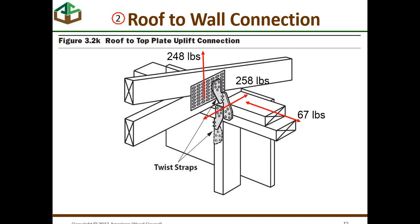We haven't spent much time discussing the differences between components and cladding loads and main wind force resisting system loads. The loads at this truss-to-wall connection are main wind force resisting system loads, calculated from the overturning moment we did in webinar one to get us a connector load at the end of the truss. These are main wind force resisting system loads because they are collecting loads from several surfaces, whereas the nail attaching sheathing to the rafter is only connecting load from a small area influenced by that nail.